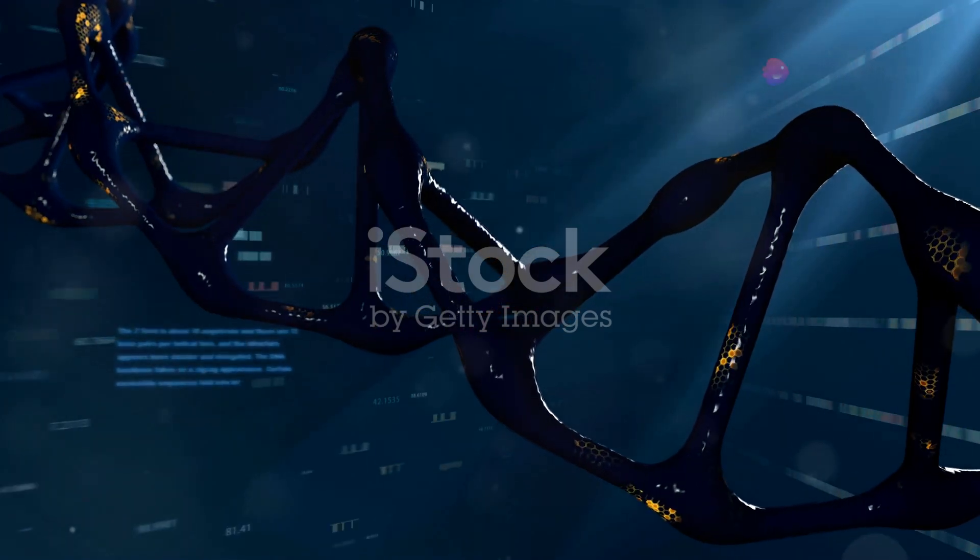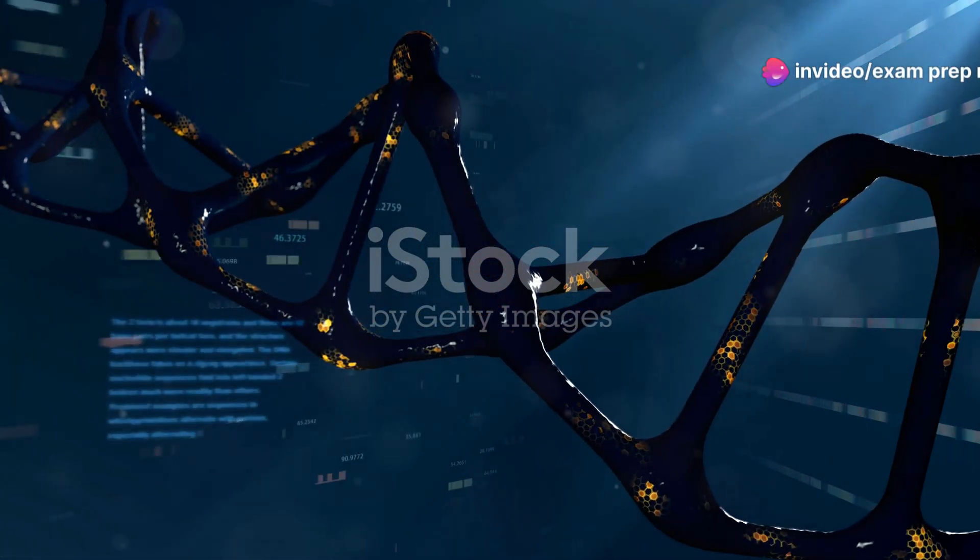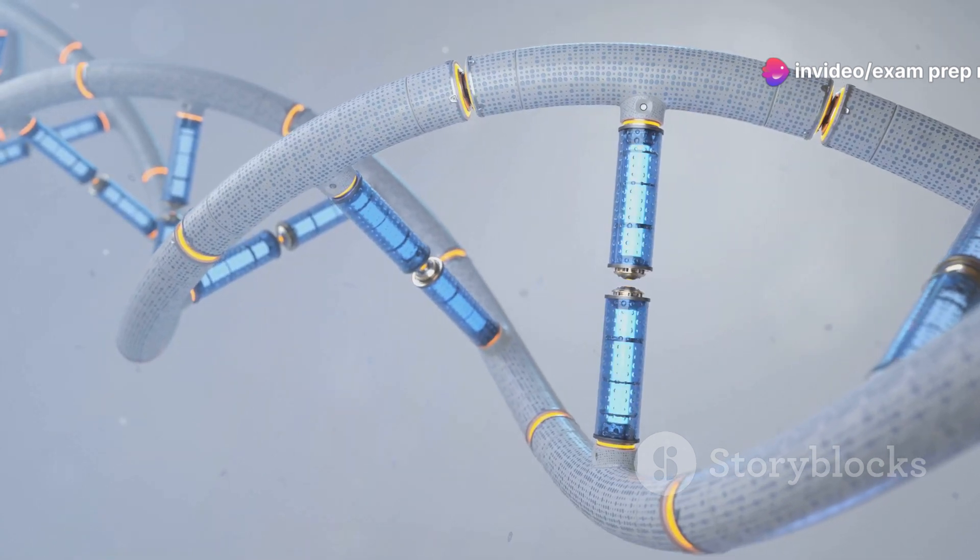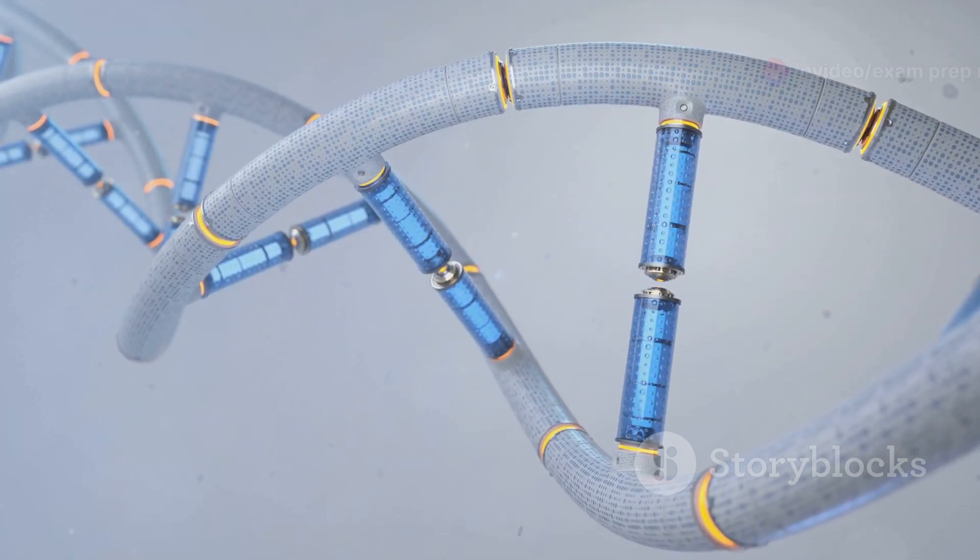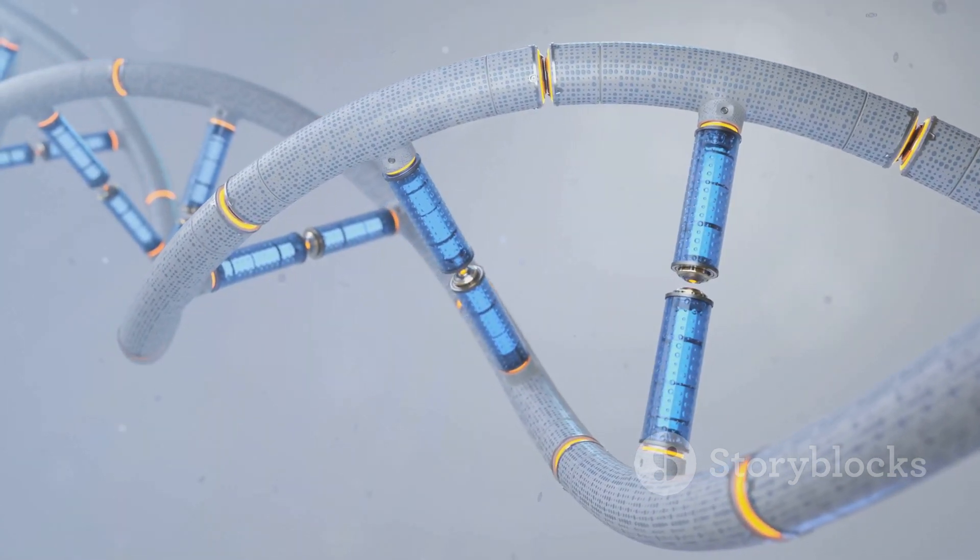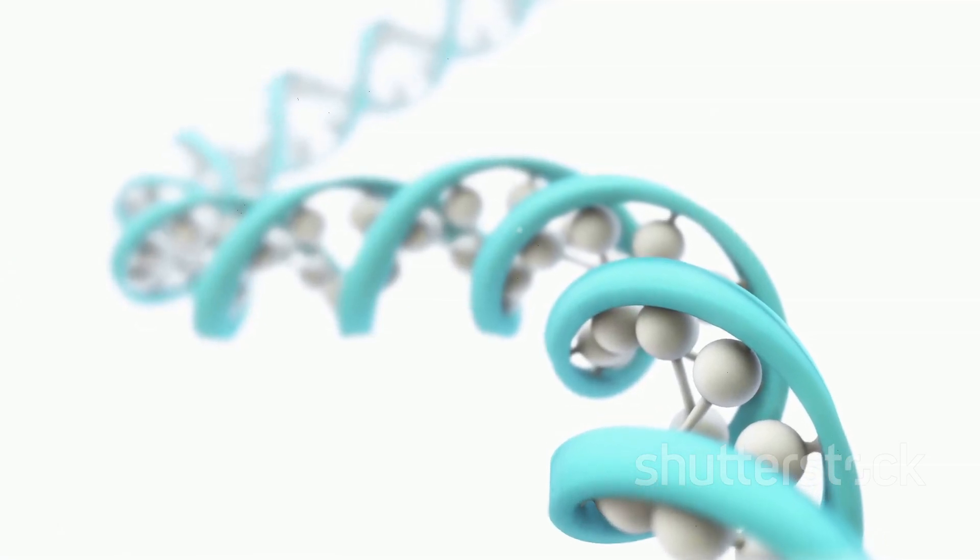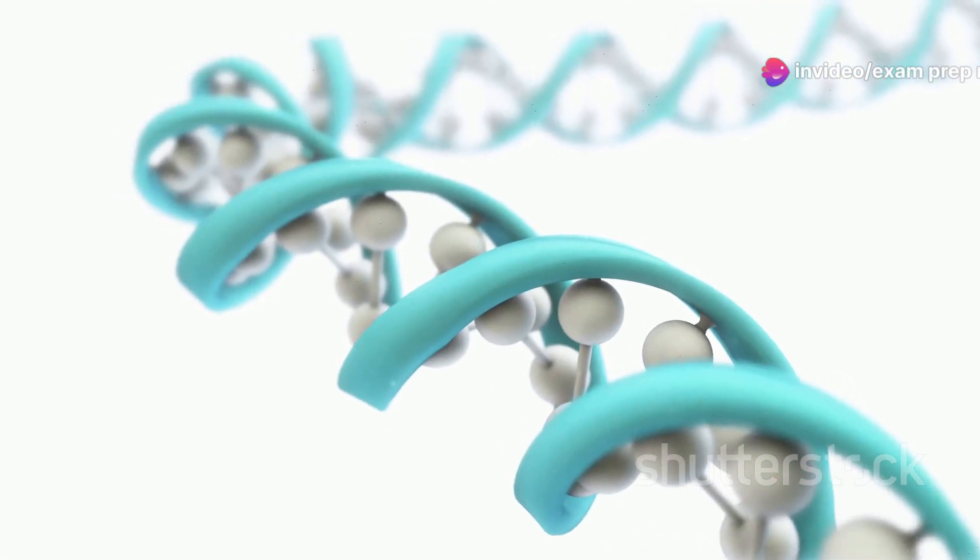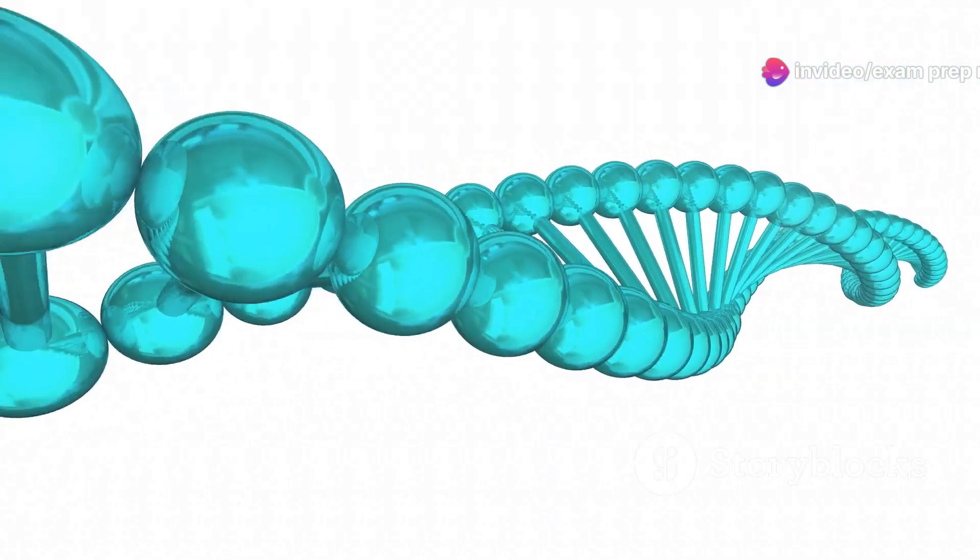Every twist and turn of the helix holds the secrets of life, from eye color to susceptibility to certain diseases. Imagine a ladder with two long sturdy rails. These rails are essential for maintaining the integrity of the DNA molecule. These rails are the sugar-phosphate backbones of DNA, providing structural support to the molecule. They ensure that the DNA remains stable and intact.